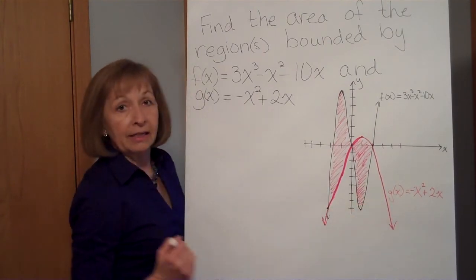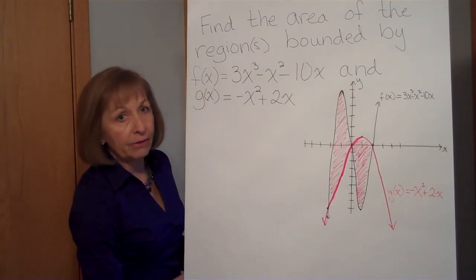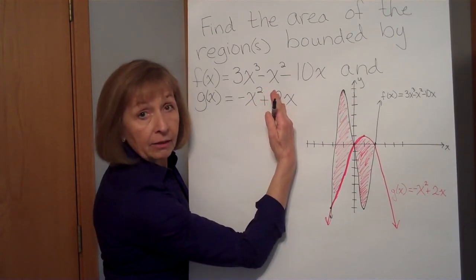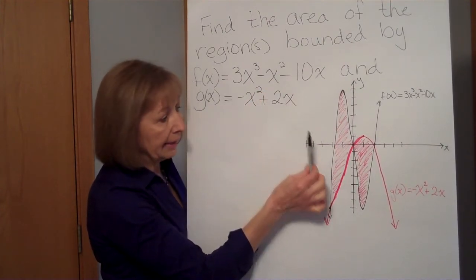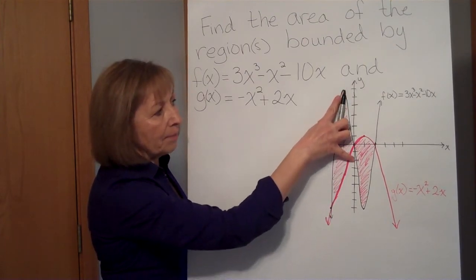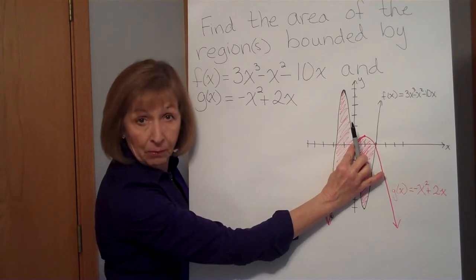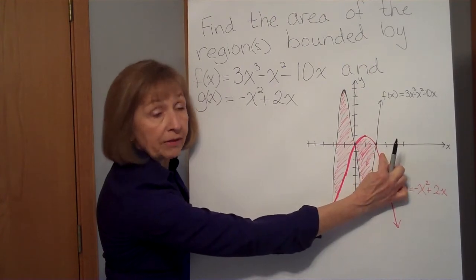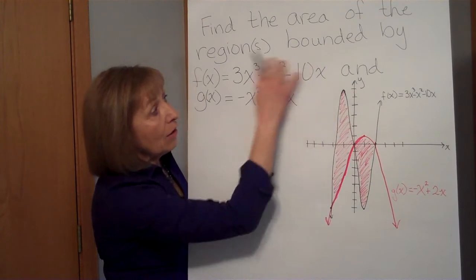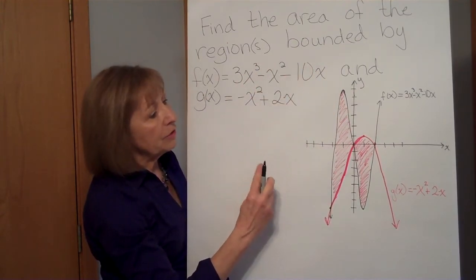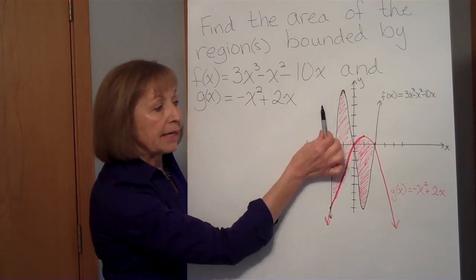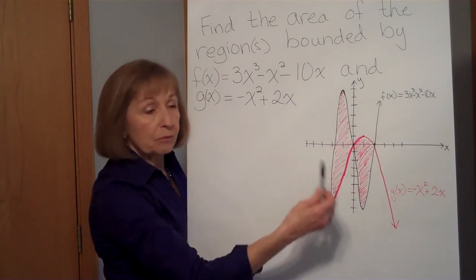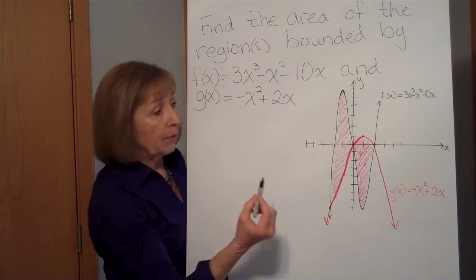I want to find the areas of both of those regions and then add them together to get the overall area. Looking from left to right with vertical sub-rectangles, I see the black curve is on top and the pink curve is on the bottom until the first intersection point, then the pink curve is on top and the black curve is on the bottom. Running sub-rectangles vertically means I'm doing DX, so I want equations as Y equals an expression in X — which these are.